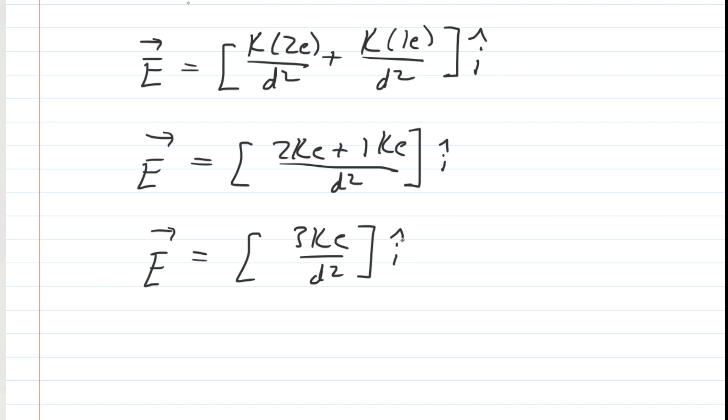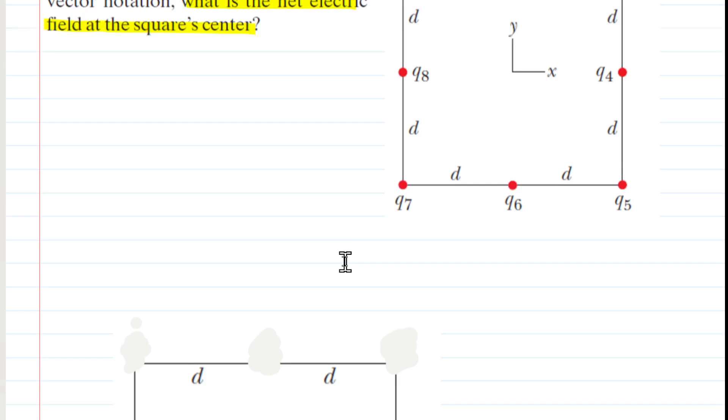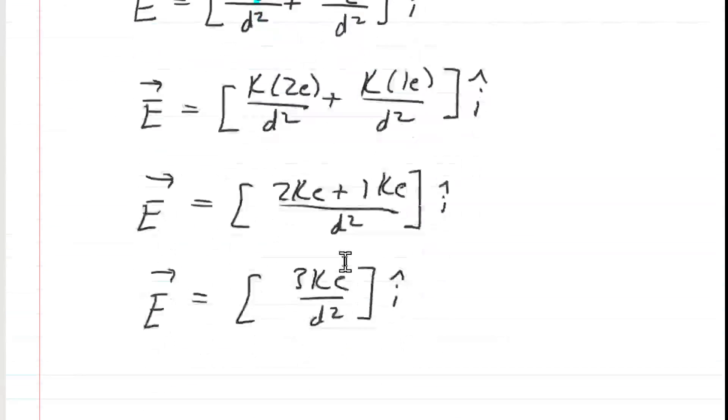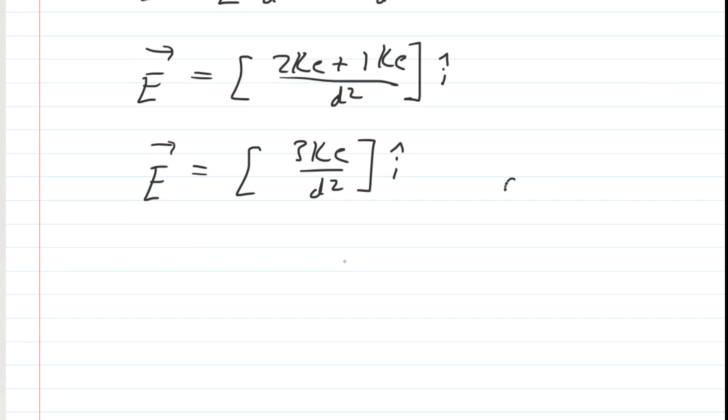Now we can plug in the numbers. K is a universal constant as is E. And D was given to us as 2 centimeters. Be careful there, of course, need to convert that into meters by multiplying by 10 to the negative 2. So let's go ahead and plug in the known values.